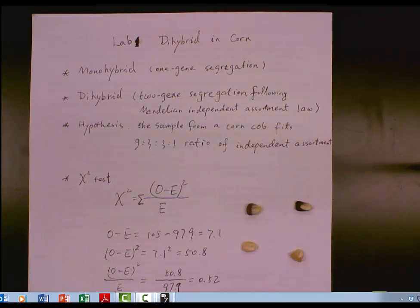So in this lab, we will learn how to collect the data and do the chi-square test to see the observed data collected. We will see whether the collected data fits 9:3:3:1 ratio of independent assortment law made by Mendel.